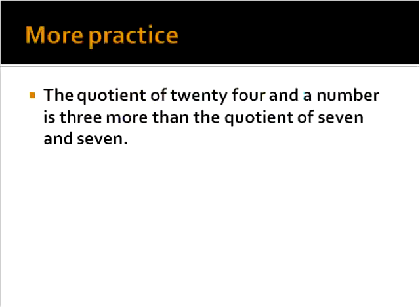Let's look at one more practice question today. Kind of a complicated one as well. But we'll use the same color coding to hopefully make things a little bit easier to swallow. The quotient of 24 and a number is three more than the quotient of seven and seven. So here are the different parts. We're talking about the quotient of 24 and a number. We have is three more than the quotient of seven and seven.